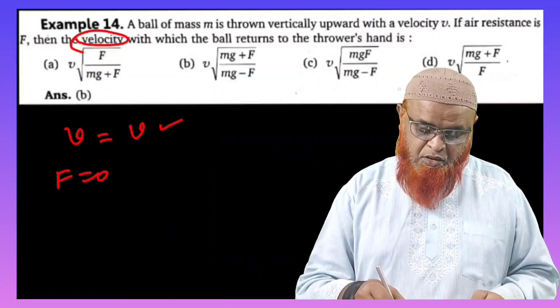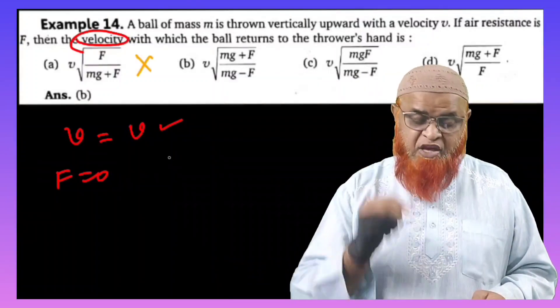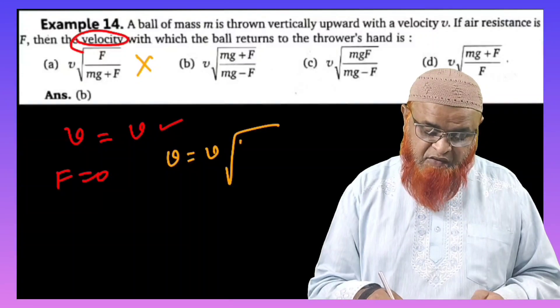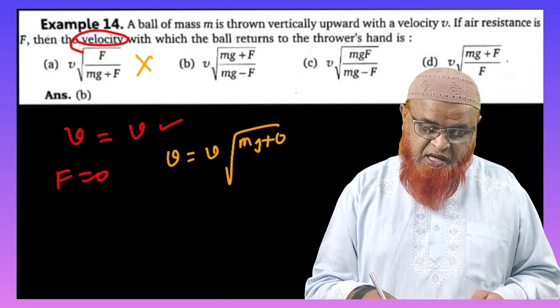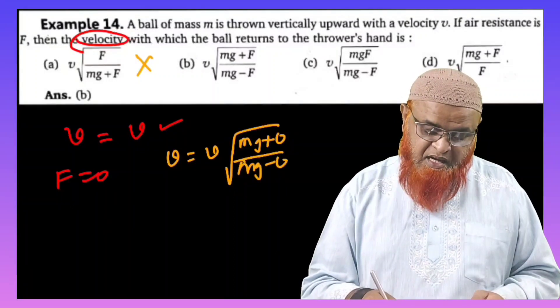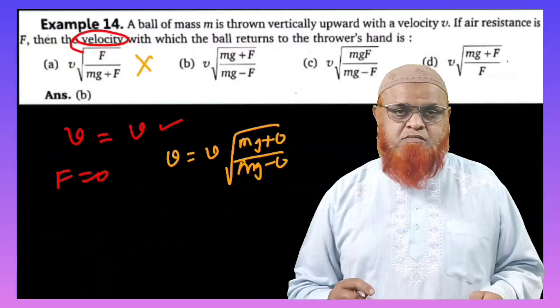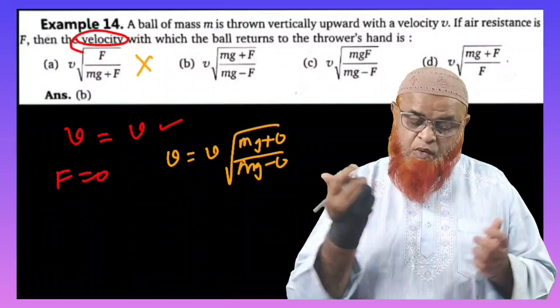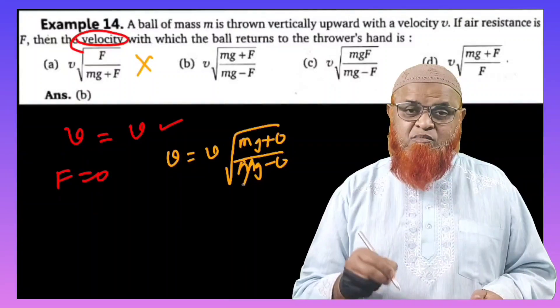Option number B also, if you check here. So velocity is equal to V times square root of Mg plus 0 because I have taken F equal to 0, and Mg minus 0. So if you take force as 0, then what is going to happen here?